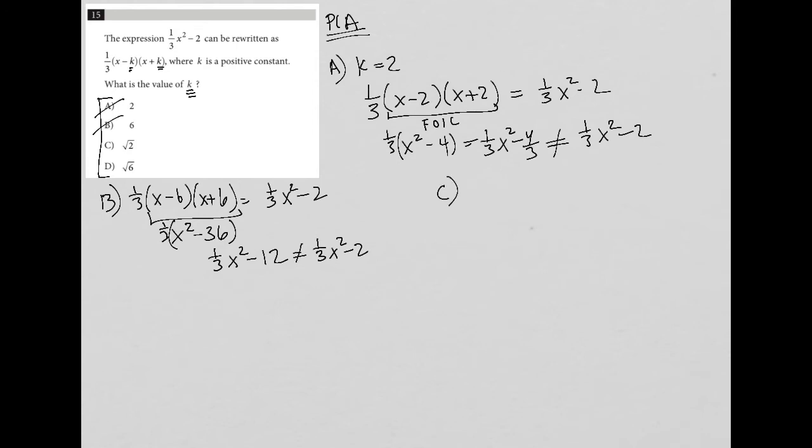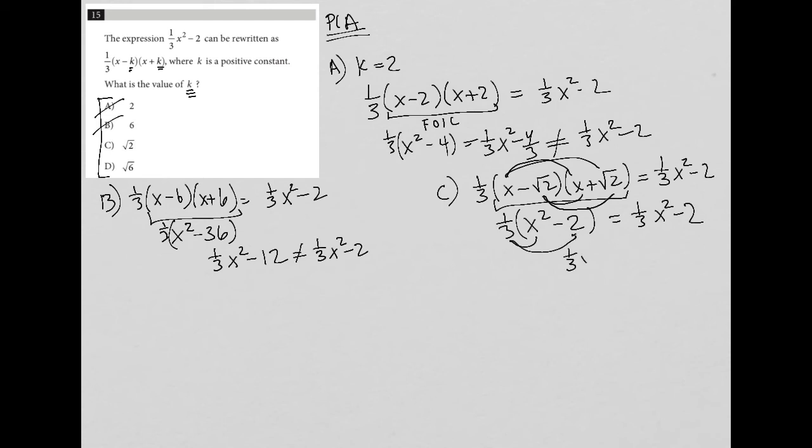So let's try choice C. I have 1/3(x - √2)(x + √2), and we want that to equal 1/3 x² - 2. x minus √2 times x plus √2, if we were to FOIL, x times x is x², x times positive √2 and x times negative √2 would cancel out. But negative √2 times positive √2 would be minus 2. I'd have the 1/3 out in front of the entire thing here. So although this looks like it's going to be the same answer, it is not, because the 1/3 has to be multiplied across the parentheses, which means I'd actually have 1/3 x² - 2/3, which does not equal this.